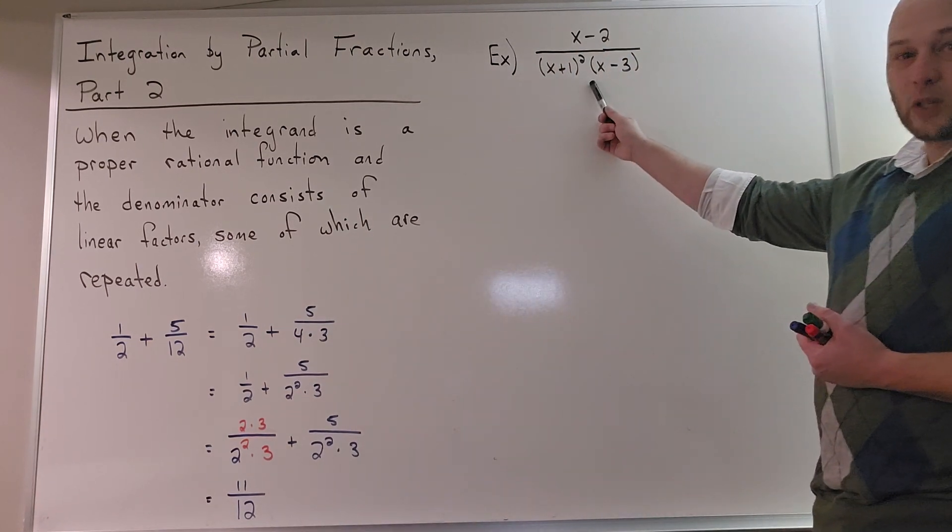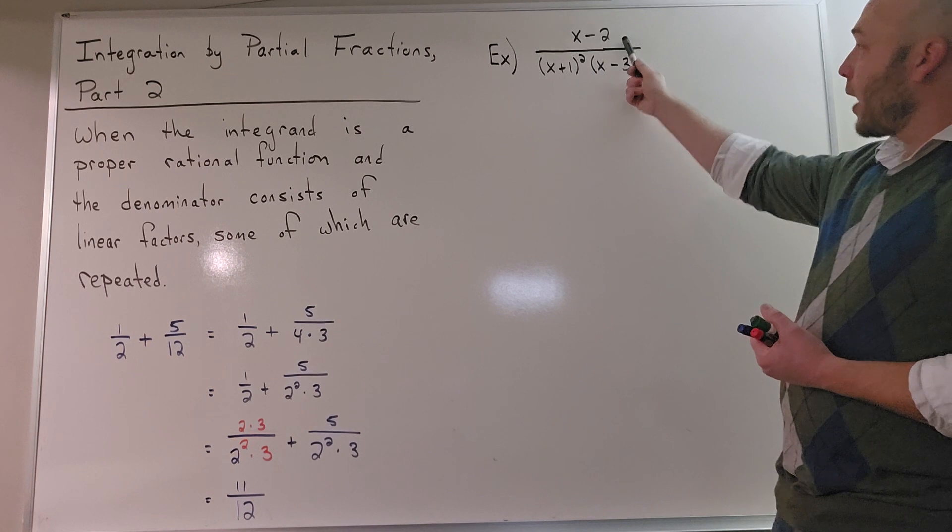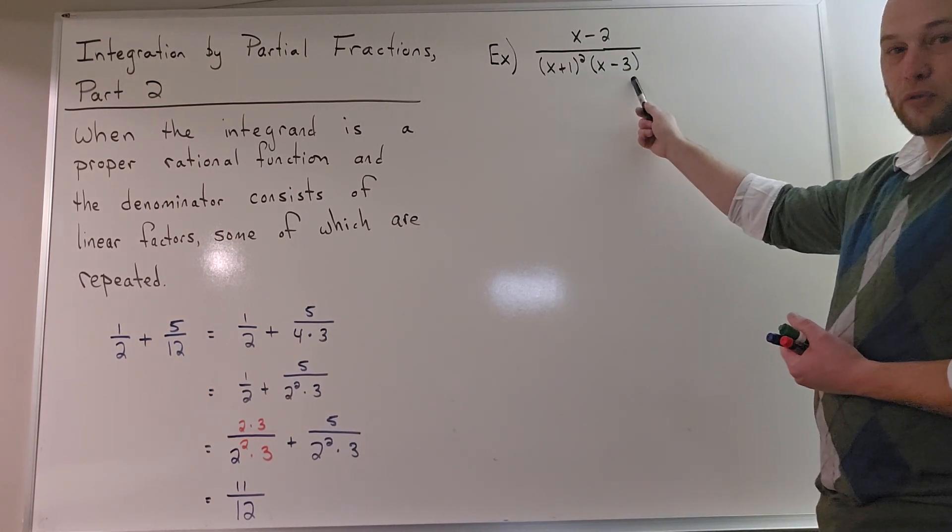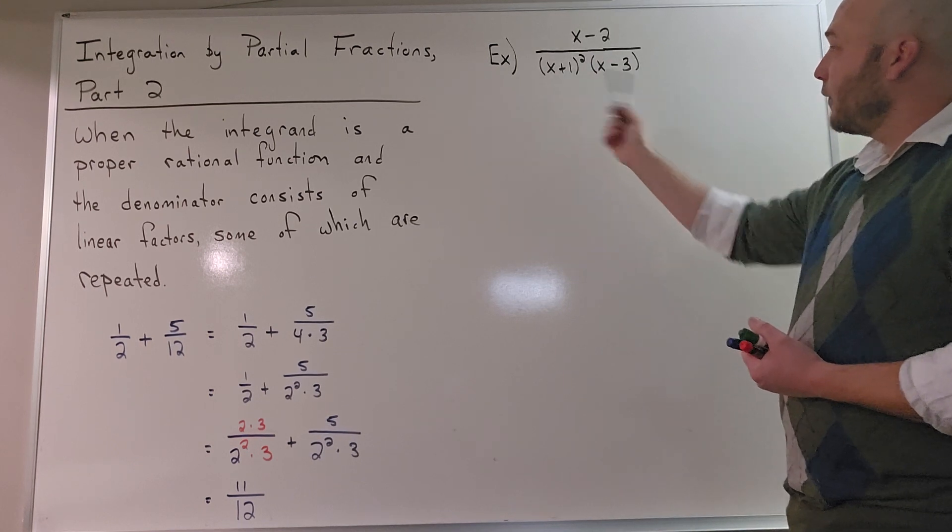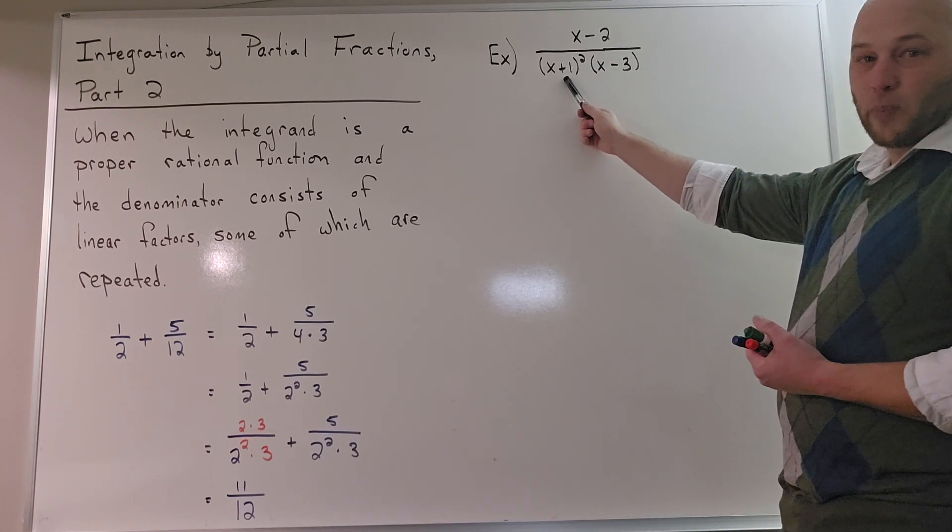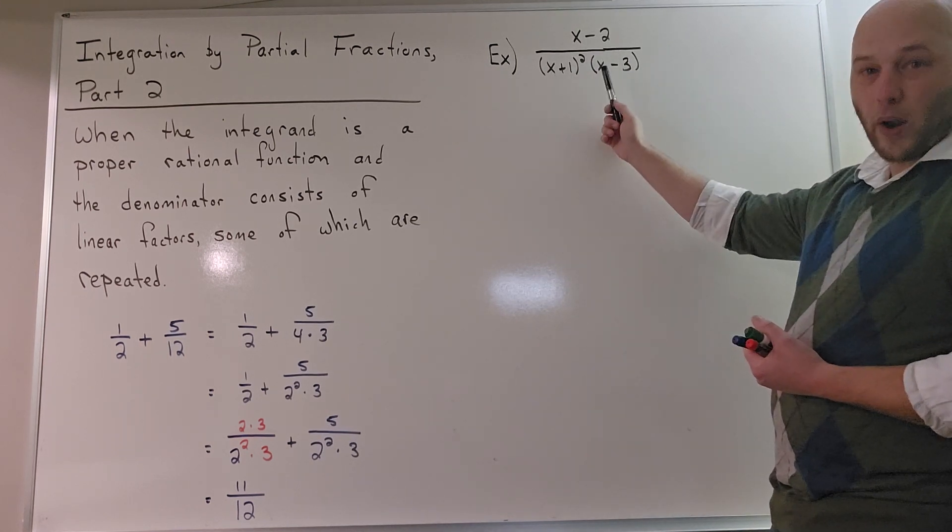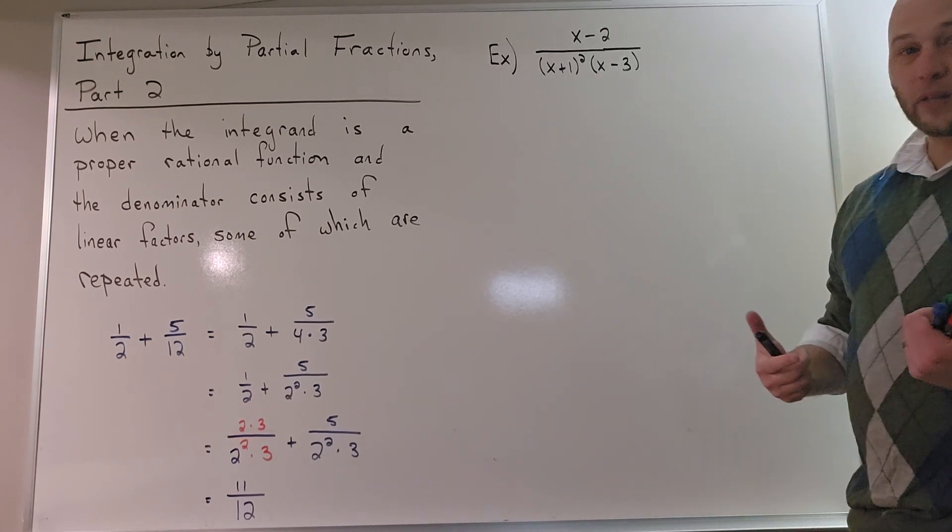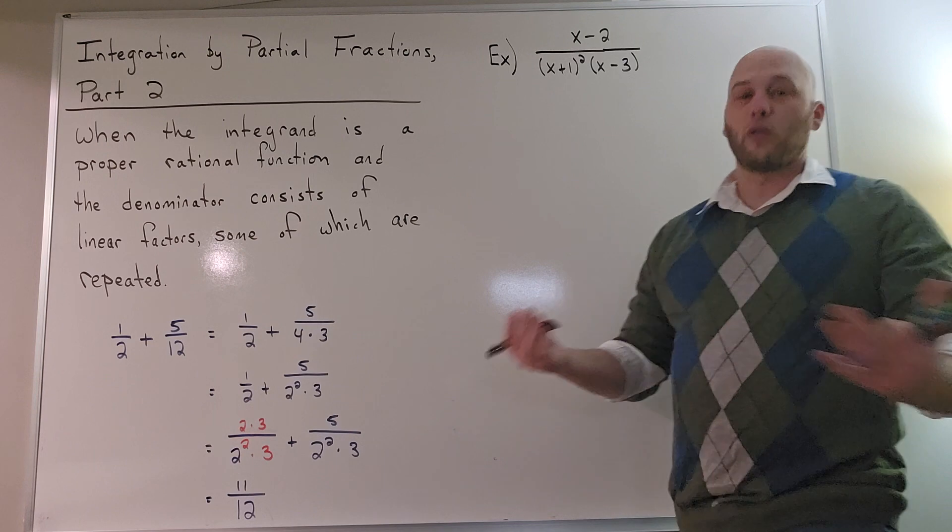And more specifically, where the denominator consists of all linear factors, some of which are repeated. For example, this would be an expression right here where it's a proper rational function: the degree of the top is one, degree at the bottom is three. I've got all linear factors, and notice x plus one is repeated. I've got x plus one squared. Repeated means if I was to write this out without exponents, I would have one factor appearing more than once.